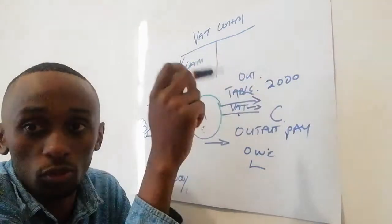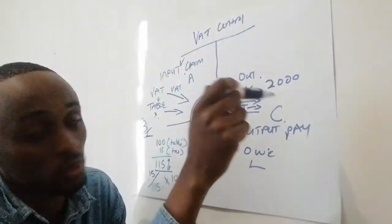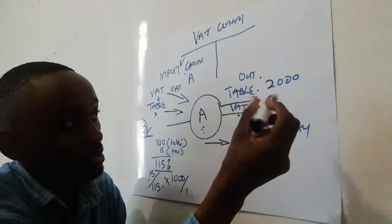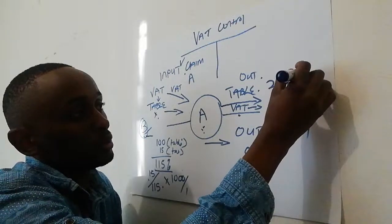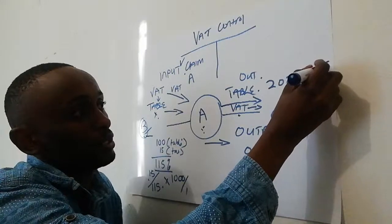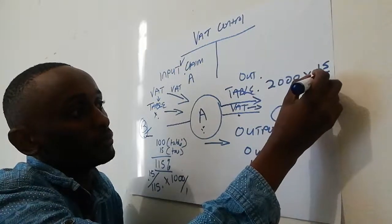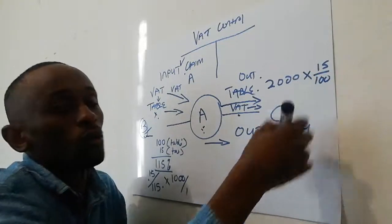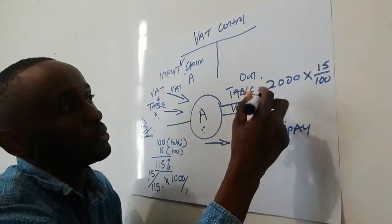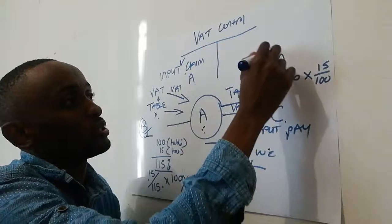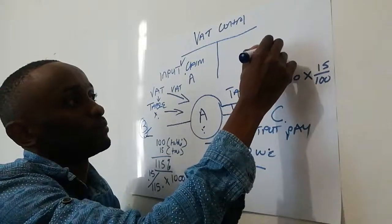For you to be able to sell this thing properly for two thousand and reach your targets, your markups and margins, you now have to say: two thousand times 15 over 100. Why? This amount excludes VAT. Make sense?